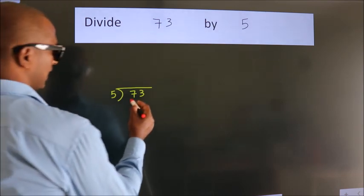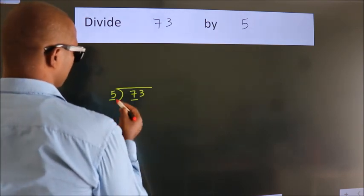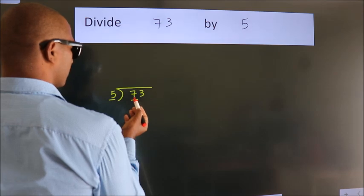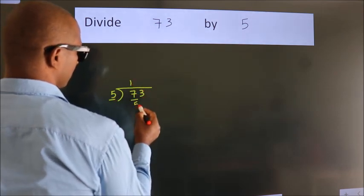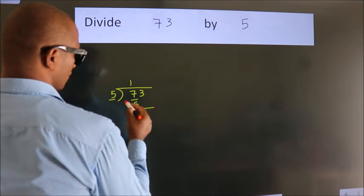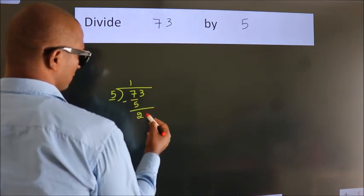Here we have 7. Here 5. A number close to 7 in the 5 table is 5 once, 5. Now we should subtract. We get 2.